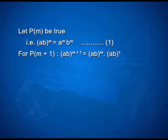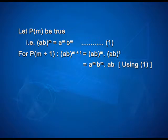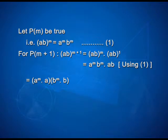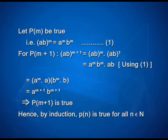For p(m+1): (ab)^(m+1) equals (ab)^m times (ab)^1, which can be simplified as a^m times b^m times ab using equation 1. This can be expressed as a^m times a times b^m times b. Here we are using laws of exponents — when the bases are the same, you add the exponents. So it can be expressed as a^(m+1) times b^(m+1), which implies p(m+1) is true. Hence, by the principle of mathematical induction, p(n) is true for all natural numbers n.